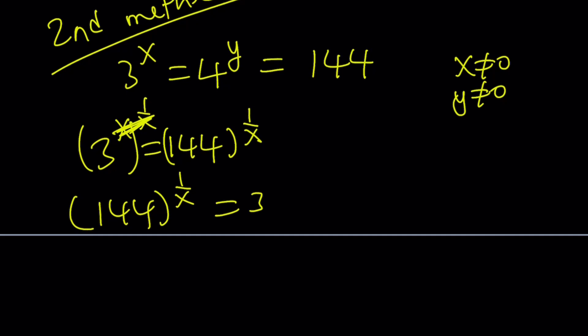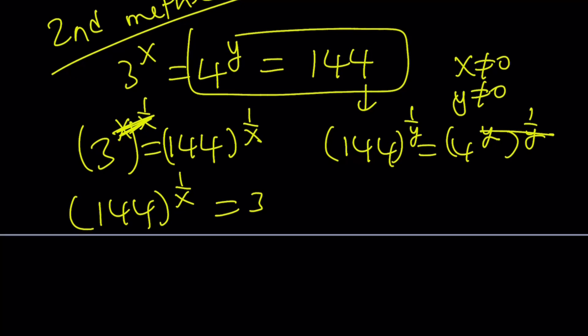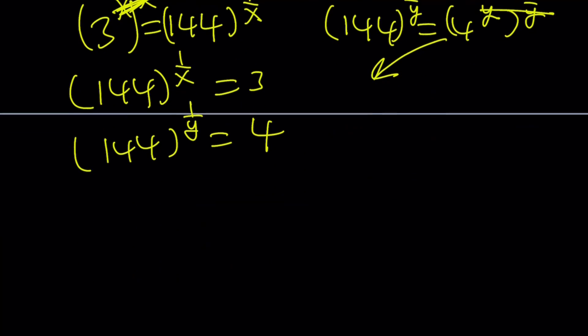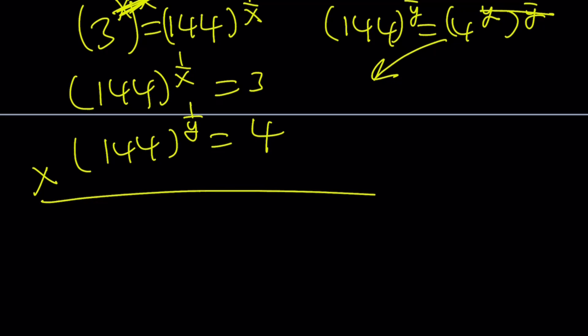Similarly, if you work with these two things, we can do the following: 144 equals 4 to the y, raise both sides to the power 1 over y and cancel out the y's and you're going to get 144 to the power 1 over y equals 4. Nice. Now, we got these two equations and remember 3 times 4 is 12. So why not multiply these two expressions? That's kind of nice because you have the same base.